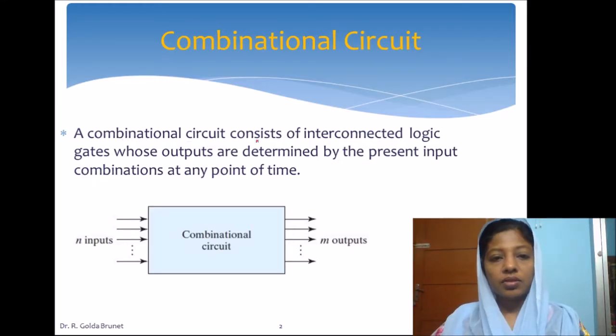A combinational circuit is one that consists of interconnected logical gates whose outputs are determined by the present inputs. That is, we apply some inputs that can be any number of inputs, say for example, n inputs, and we have the combinational logic circuit.